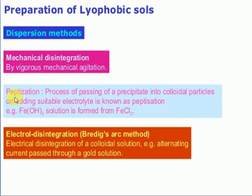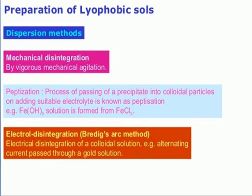The peptidization method involves converting a suspension into a colloidal solution. Initially, if we have a suspension, I add a small amount of electrolyte to convert that suspension into a colloidal solution — that process is called peptidization. Next is the electrical disintegration method, also called the Bredig's arc method.